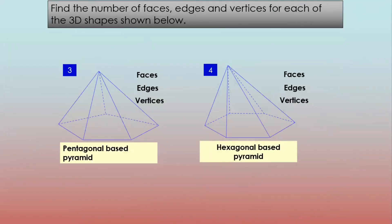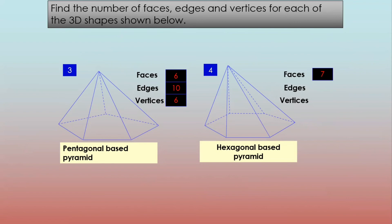Find the number of edges, faces, and vertices for each of the 3D shapes given below — these are pyramids: a pentagonal-based pyramid and a hexagonal-based pyramid. For the pentagonal pyramid: faces are six (five plus one), edges are ten (five twos), vertices are six (five plus one). For the hexagonal pyramid: faces are seven (six plus one), edges are twelve (six twos), and vertices are seven (six plus one).